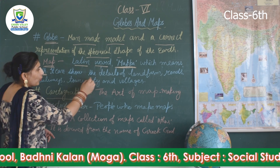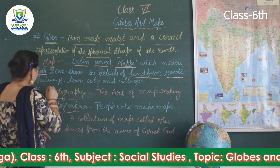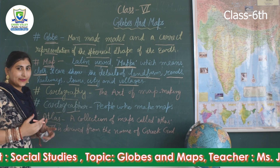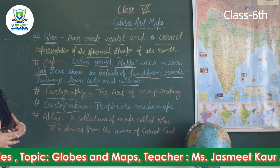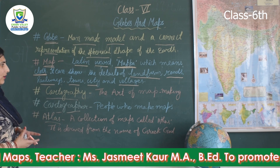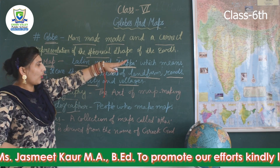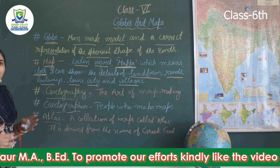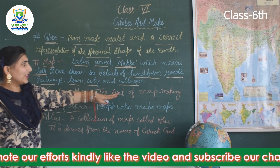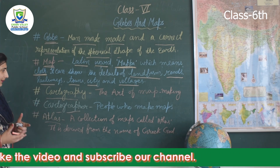A map can show details of landforms, roads, railways, towns, cities, and villages. You will find maps at large scale and small scale. One map can show only one city, one town, railways, villages, roads, or landforms. So there are various types of maps.